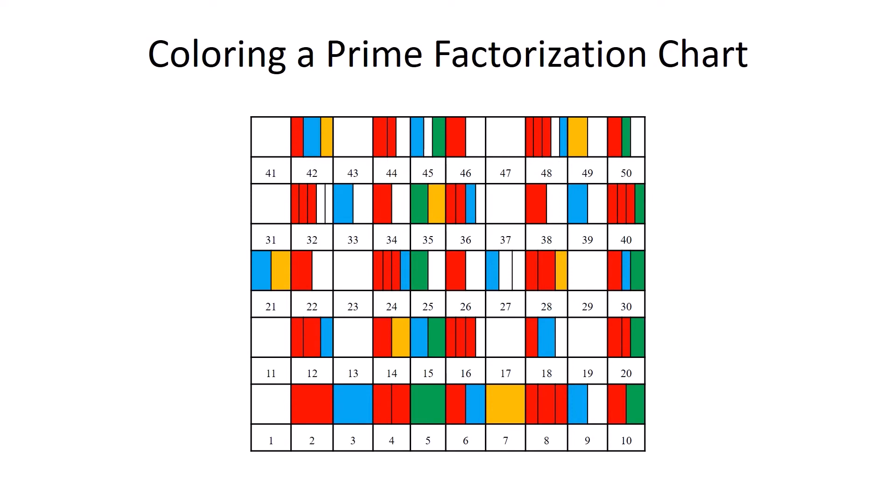Okay, the next number nine is only partly filled in. And that's because nine is a power of three. Nine equals three times three. So I need one more blue section for nine. And now all the multiples of nine need one more blue section. So nine plus nine is 18. 18 plus nine is 27. 27 plus nine is 36. 36 plus nine is 45.